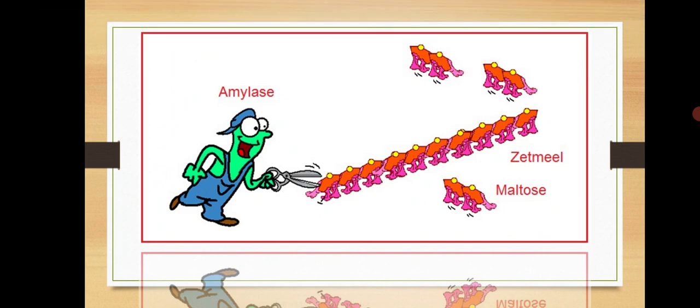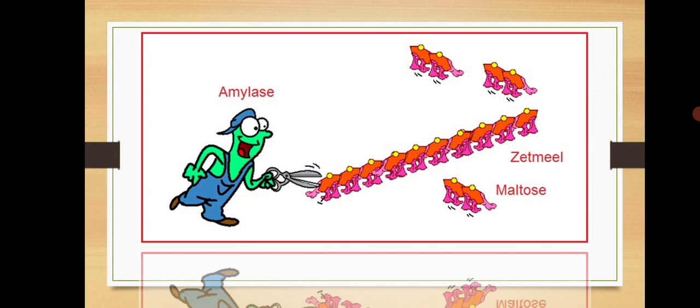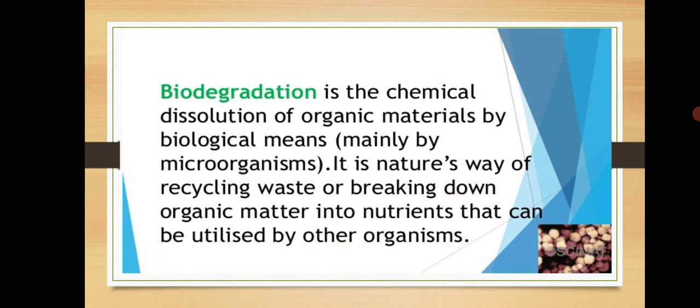We already know what starch is and what components constitute it. The amylase enzyme cuts the starch polysaccharide into different units. Two glucose units which are separated are termed as maltose, which is a disaccharide sugar. A cartoon image has been shown representing the cutting of starch with the help of amylase enzyme into disaccharide products.